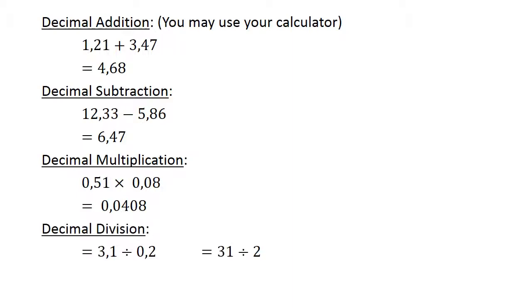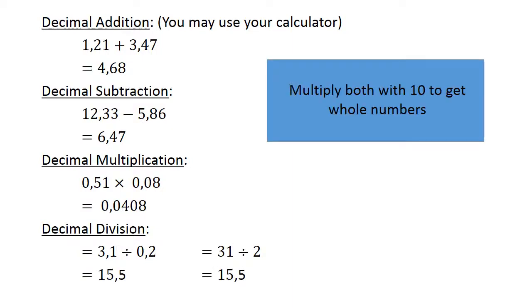Decimal division. Three point one divided by zero point two. Multiply both by ten to get whole numbers. Thirty-one divided by two equals fifteen point five.